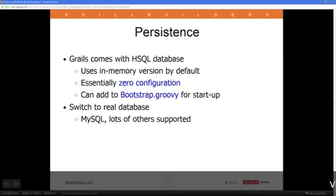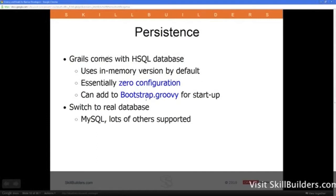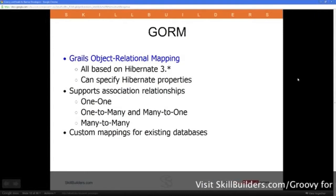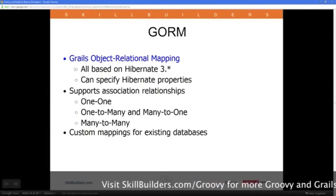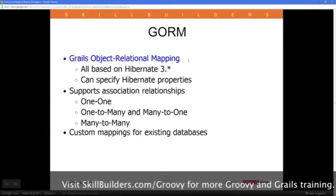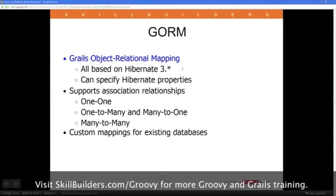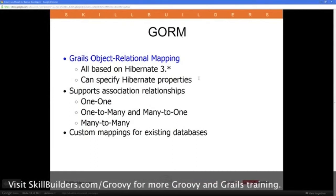The persistence business. GRAILS comes with an HSQL database using an in-memory version, so there's zero configuration. I can add code to the bootstrap for startup and switch to pretty much any database I want. That business with has-many and belongs-to — setting up the relationships — is part of GRAILS Object Relational Mapping, or GORM. It's all based on Hibernate.